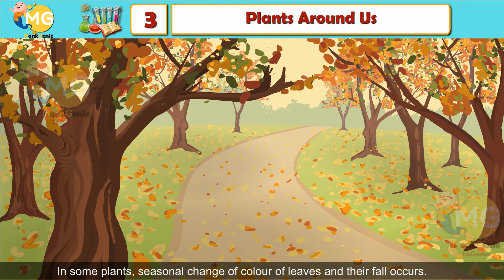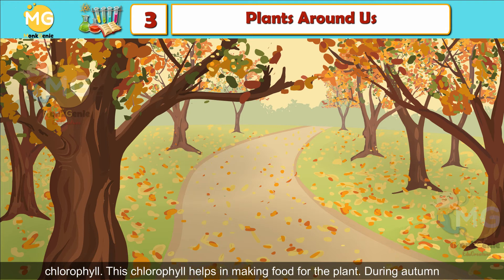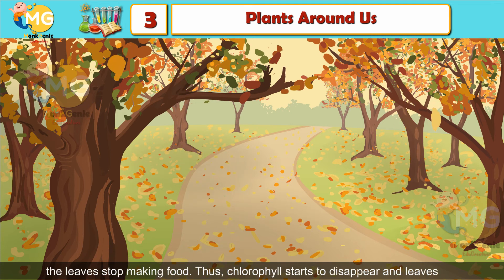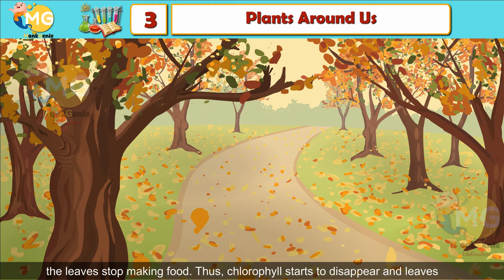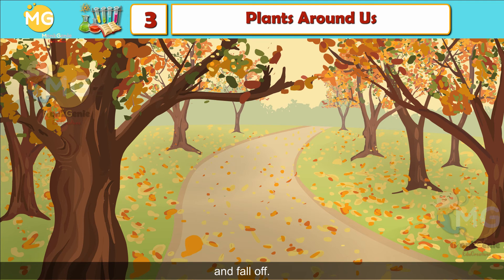In some plants, seasonal change of color of leaves and their fall occurs. Leaves are green due to the presence of a green pigment called chlorophyll, which helps in making food for the plant. During autumn — the season before winter — the tree goes into resting mode and leaves stop making food. Thus, chlorophyll starts to disappear and leaves turn yellow, orange, red, or brown, ultimately becoming completely dry and falling off.